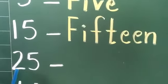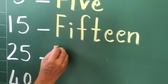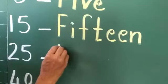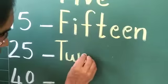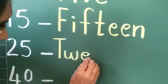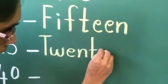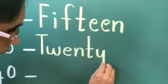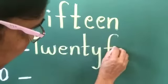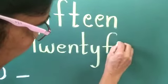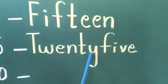The next is 2, 5 — 25. You are going to write the spelling of 20 first. T, W, E, N, T, Y. Then F, I, V, E — 25.